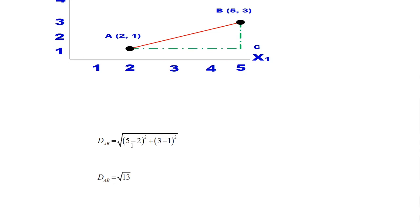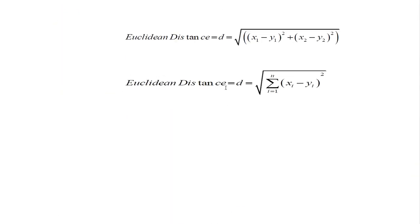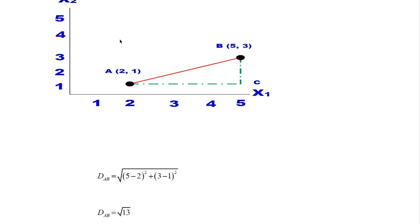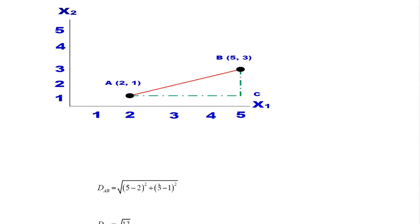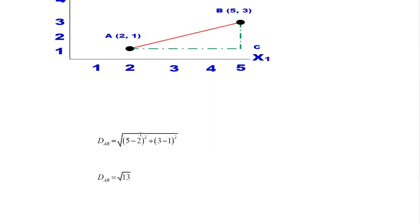D of AB equals square root of (5 minus 2) squared—if we put the value into this formula, this is the generalized form. Our observations, we suppose one point is x1 and one point is x2—plus (3 minus 1) squared. And after simplification, we got square root of 13. D of AB equals square root of 13. This is the procedure to find the distance between two points. Thanks for watching.